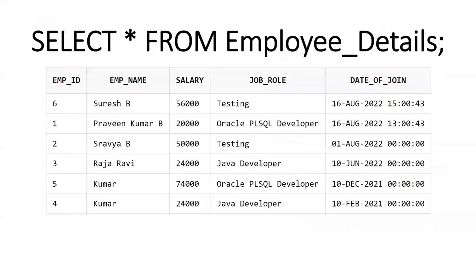I can see the data. The employee_details table has five columns and six records: employee name, salary, job role, and date of joining. Today's date is 16th August — two records were created today. In August month there are three records total. In 2022, four records have been created. In 2021, two records were created.